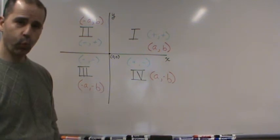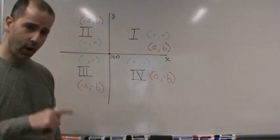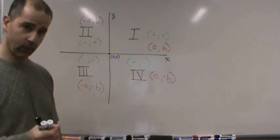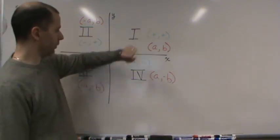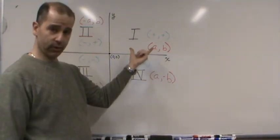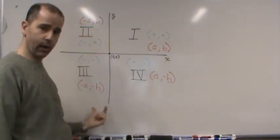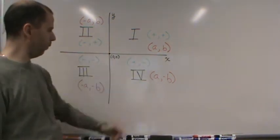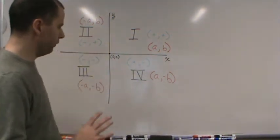The other thing to remember is that the quadrants are numbered counterclockwise one through four. So this is quadrant one, two, three, four.